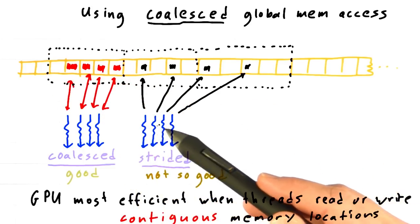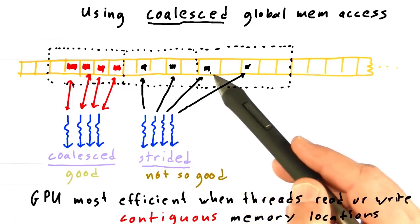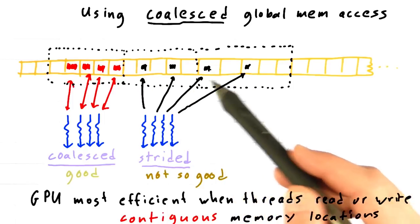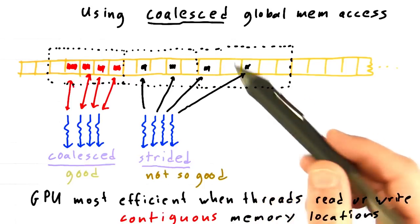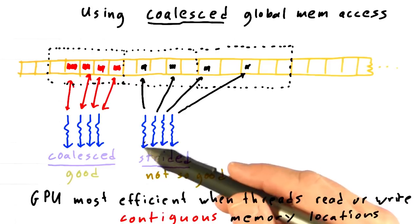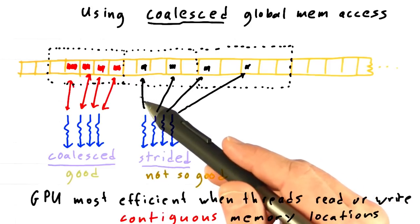Whereas in this case, the same four threads are accessing a broader striding across memory, and I actually need to pull in two memory transactions, two of these chunks of memory in order to service that. So I'm going to get half of the speed out of my global memory here.